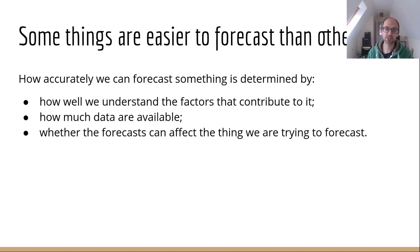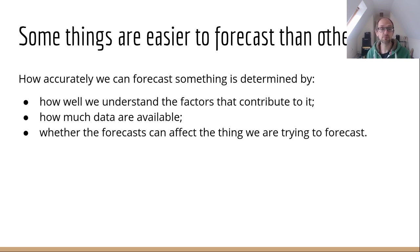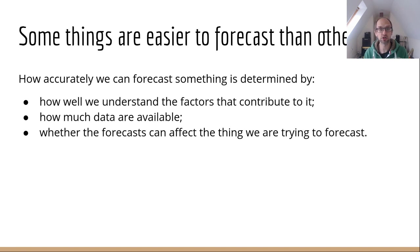Another really big issue is whether the forecast itself affects the thing we are trying to forecast. For example, if we think the NHS is going to be overloaded by COVID and we've built forecasting models to predict that, then we're going to take actions to try and stop that from happening — so we'll never know if our forecasts were actually correct.